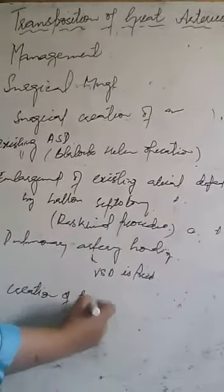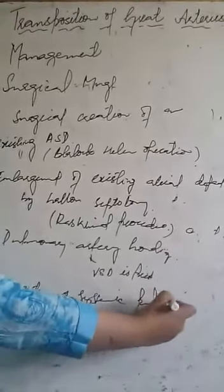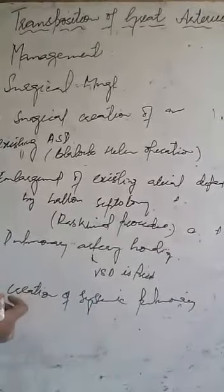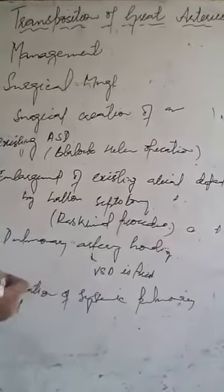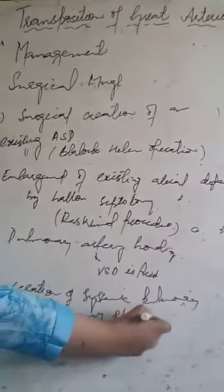Creation of a systemic-pulmonary shunt is done when pulmonary stenosis is present. These are the palliative procedures for TGA.